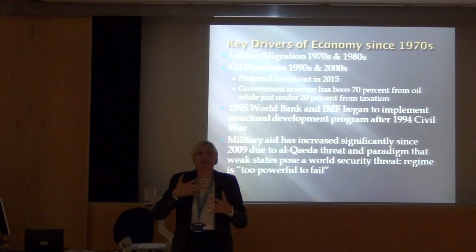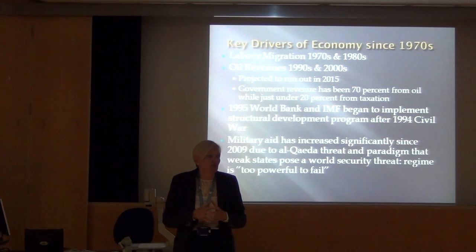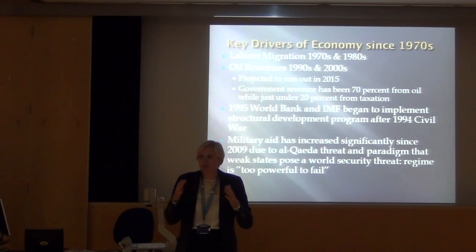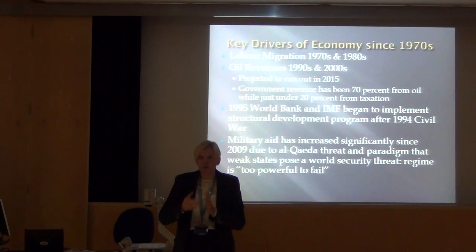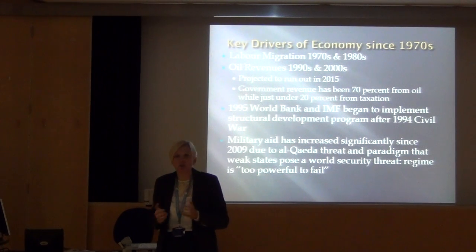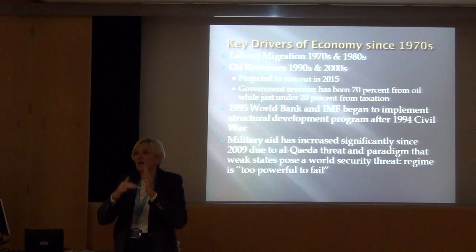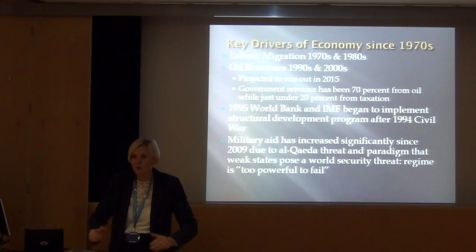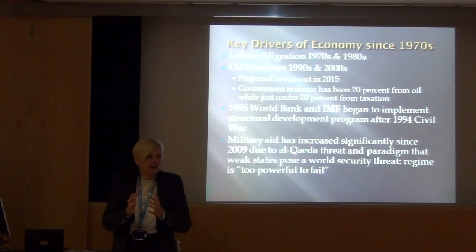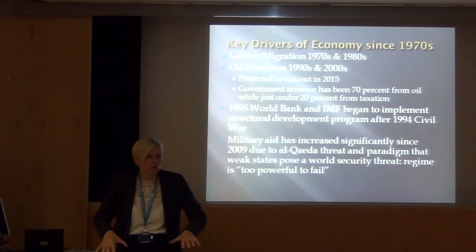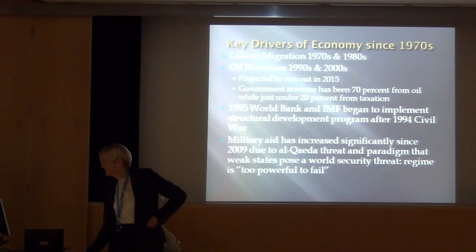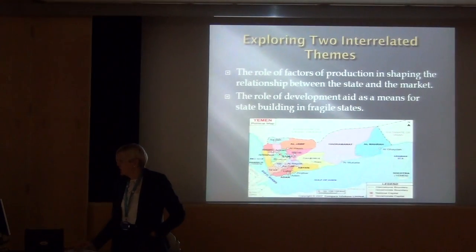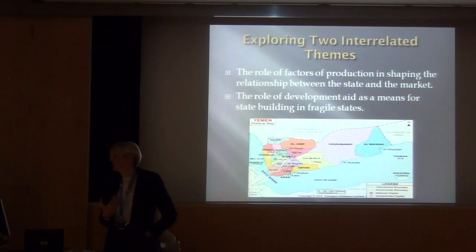Yemen then becomes really an oil-driven economy. The problem with oil — which we see in a number of oil countries, Nigeria being another case — is getting that kind of trickle-down effect. Because oil wealth, as a rent, goes into the government, and then it's got to be dispersed. Whereas when Yemen was getting labor migrant money, it was more distributed because it was coming to individuals. With that transition came a lot of discontent. We see two interrelated themes here: the role of factors of production in shaping the relationship between the state and markets, and the idea about development aid in these fragile states.